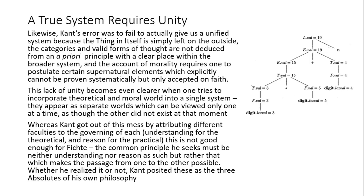This lack of unity in Kant's philosophy becomes even clearer when one tries to incorporate both theoretical and moral worlds into a single system. You find that each might appear, but only as a separate world, which might be viewed one at a time, while simultaneously requiring the existence of both for Kant's philosophy as a whole to make sense. Whereas Kant tried to get out of this mess by attributing different subjective faculties to each — understanding handles the theoretical and reason handles the practical — this is not good enough for Fichte, because it implies some common principle, which is neither understanding nor reason as such, but rather that which makes the passage from one to the other possible. Even Kant himself posited these as the three absolutes of his own philosophy, even though he'd only covered two of them.